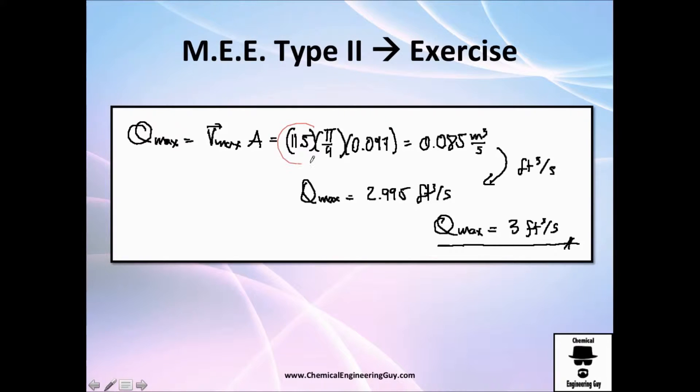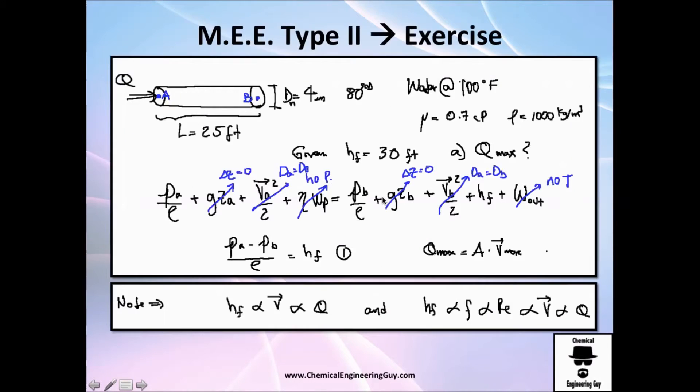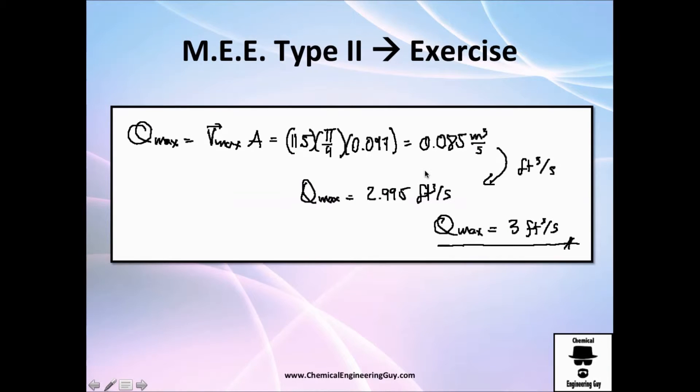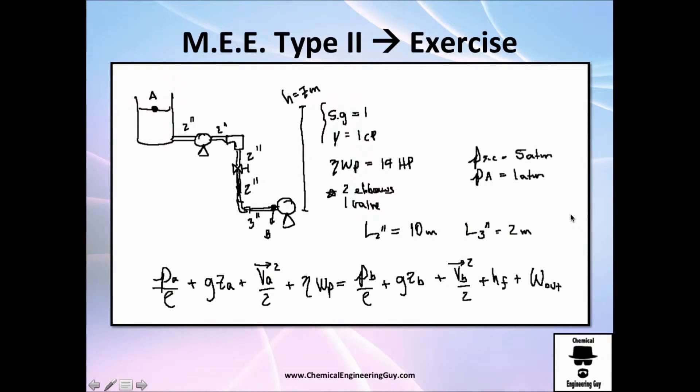Since velocity is 11.5, now I can calculate the volumetric flow rate, because I already know the velocity and the area. I got this one, 0.085 cubic meters per second. Change it to cubic feet per second, because those were the units they were asking us. We have feet, we have inches, so they're asking us to get it in English system. I round it up, and I think 3 cubic feet per second is my final answer.